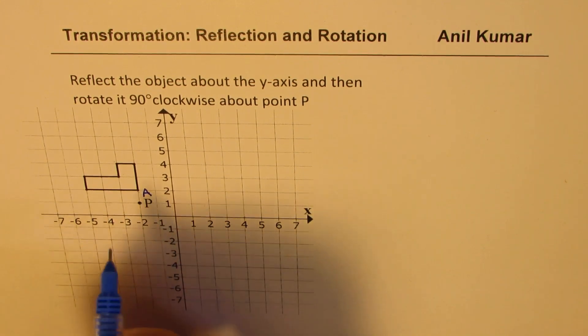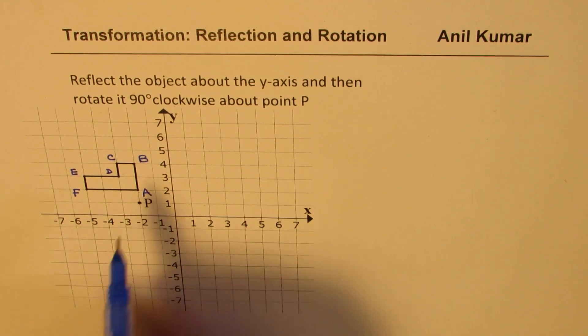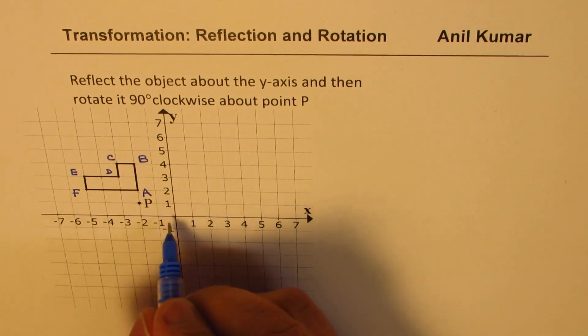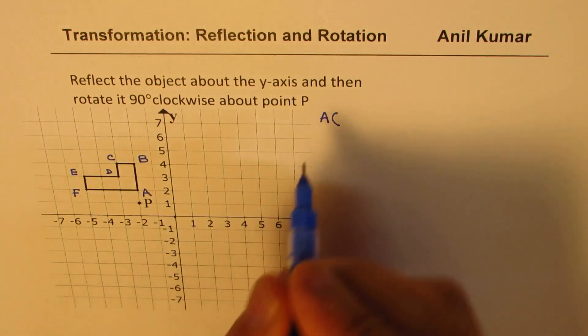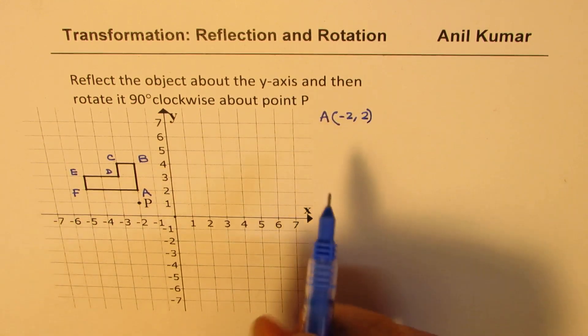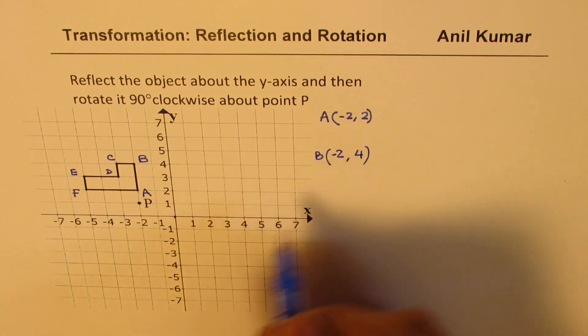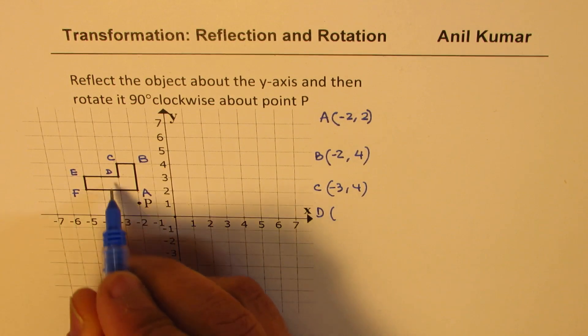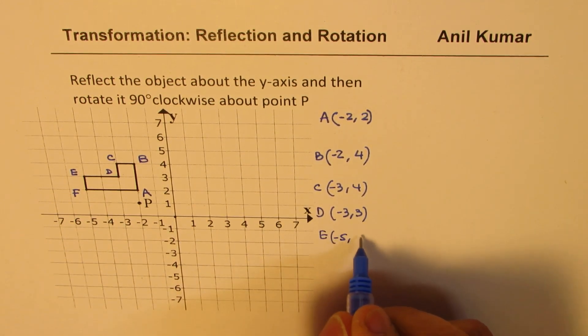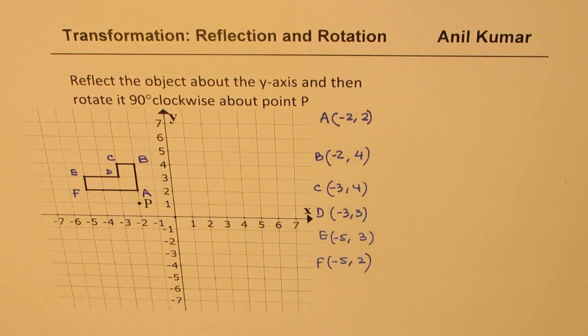So let's see how to do it. So first part is label all the vertices. So label them as A, B, C, D, E, and F. And for each vertex, we will write down the coordinates as per the coordinate system given to us. Origin O will be considered. So coordinates of A are minus 2, 2. Coordinates of B, minus 2, 4. Coordinates of C, minus 3, 4. D, minus 3, 3. E, minus 5, 3. And F is minus 5, 2. So first step is to clearly write down the coordinates of each and every point.